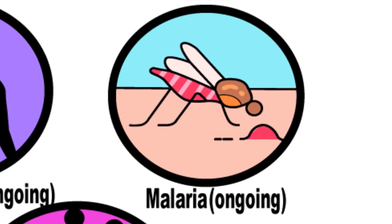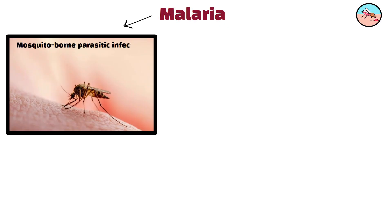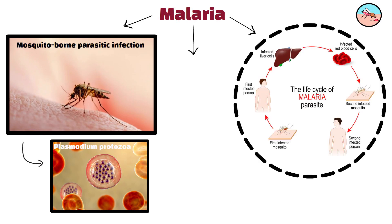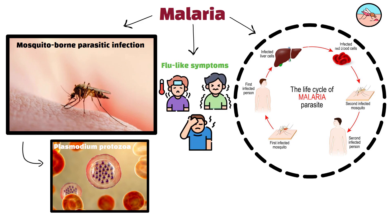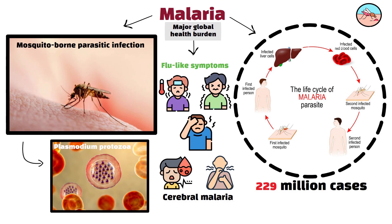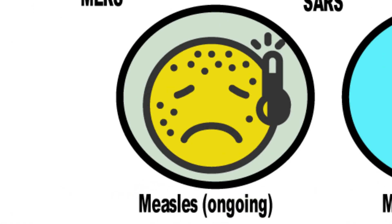Malaria, ongoing. Malaria is a mosquito-borne parasitic infection caused by Plasmodium protozoa, transmitted by infected Anopheles mosquitoes. Malaria causes flu-like symptoms such as fever, chills, and fatigue. Severe cases can lead to anemia, respiratory distress, and cerebral malaria, which can be fatal. Malaria remains a major global health burden, with an estimated 229 million cases and 409,000 deaths in 2019, primarily in sub-Saharan Africa.